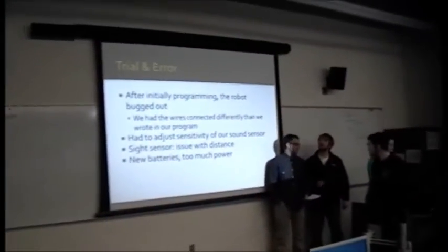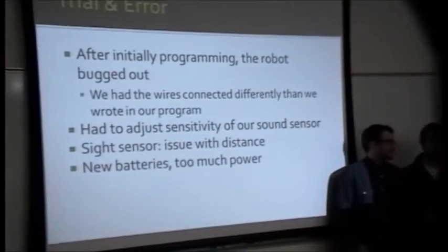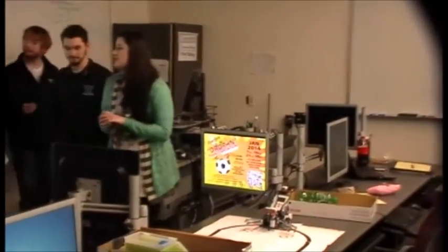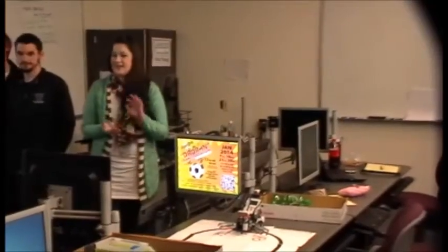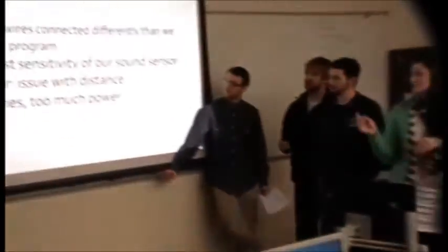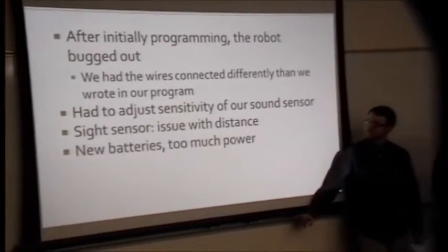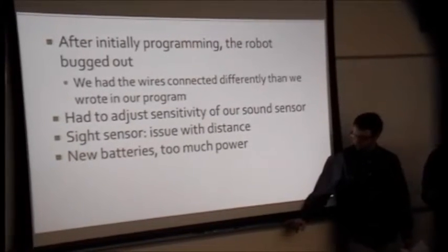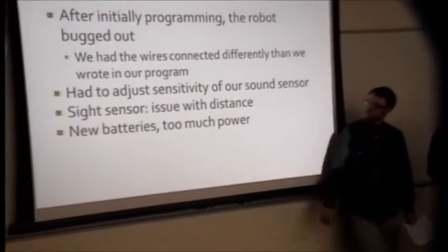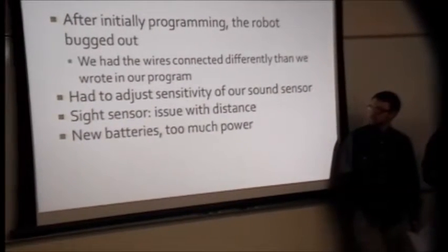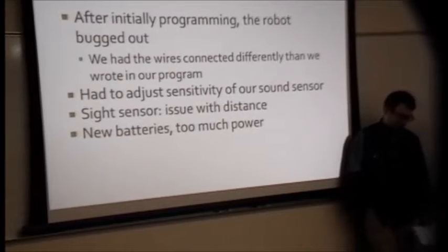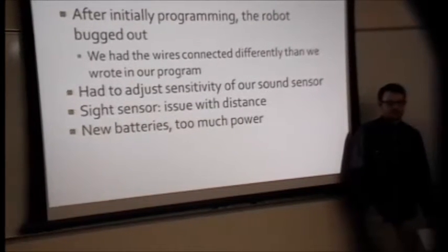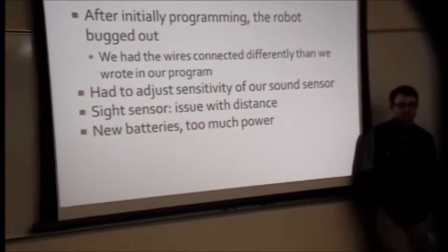So some of our trial and error - the first time we programmed it, the robot really bugged out. We realized that the wires back here were connected in different ports than we had said in our programming. Basically it was a lot of learning how to use LabVIEW. We had to adjust the sensitivity of almost all of our sensors, especially the sound sensor where we clap and then it picks up the ball. The sight sensor also had an issue with how far away the ball is. When we got new batteries, it had too much power. We had been using dead batteries to program it, so we had everything on 100% power, and when we got new batteries it was really fast.